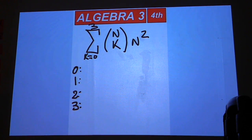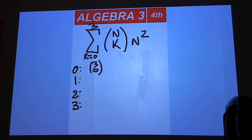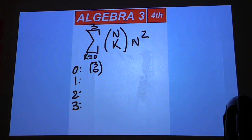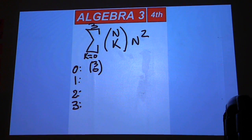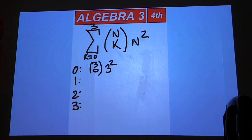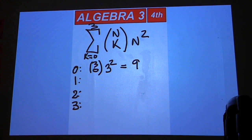Okay, if we do zero first, then that's going to be three choose zero. How many ways can you choose zero from three? One. And then we'll have n squared, that's going to be three squared, that's going to be nine. So we're going to have nine times one, which is nine.